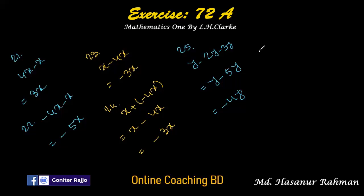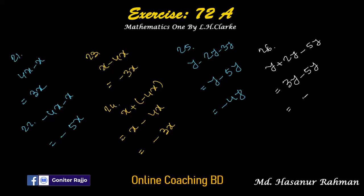Number twenty-six: y plus 2y minus 5y. The signs of y and 2y are the same, so we add: y plus 2y is 3y. Then 3y minus 5y: the sign of 5y is negative, so the answer is minus 2y.